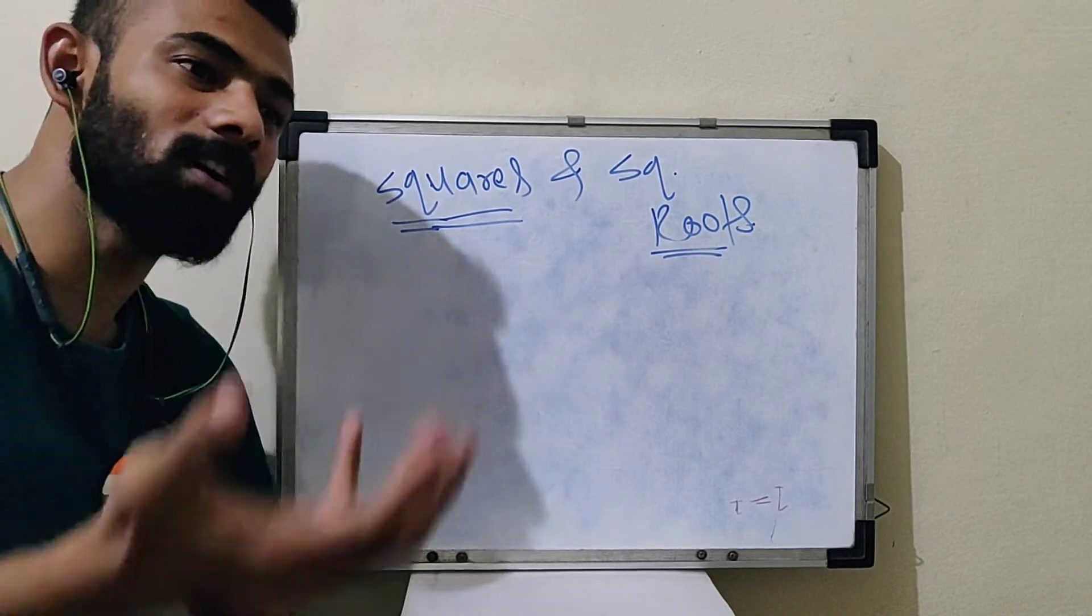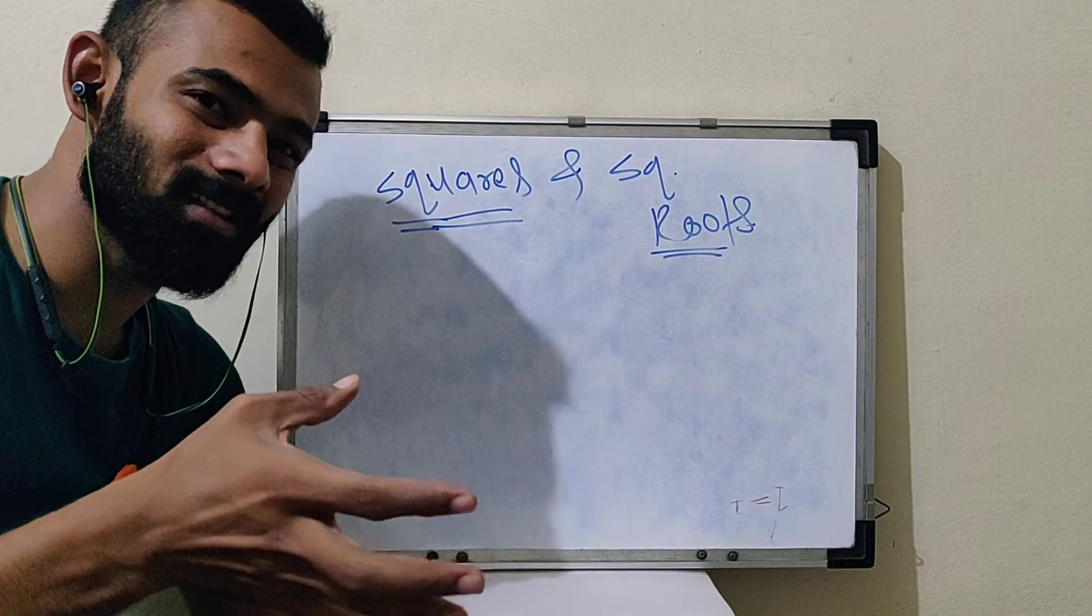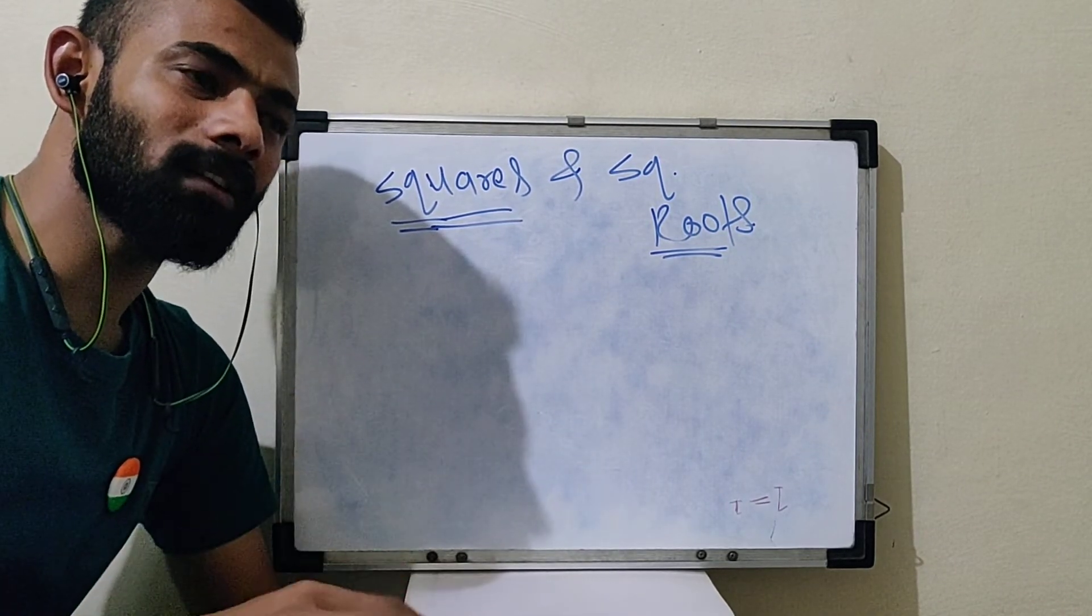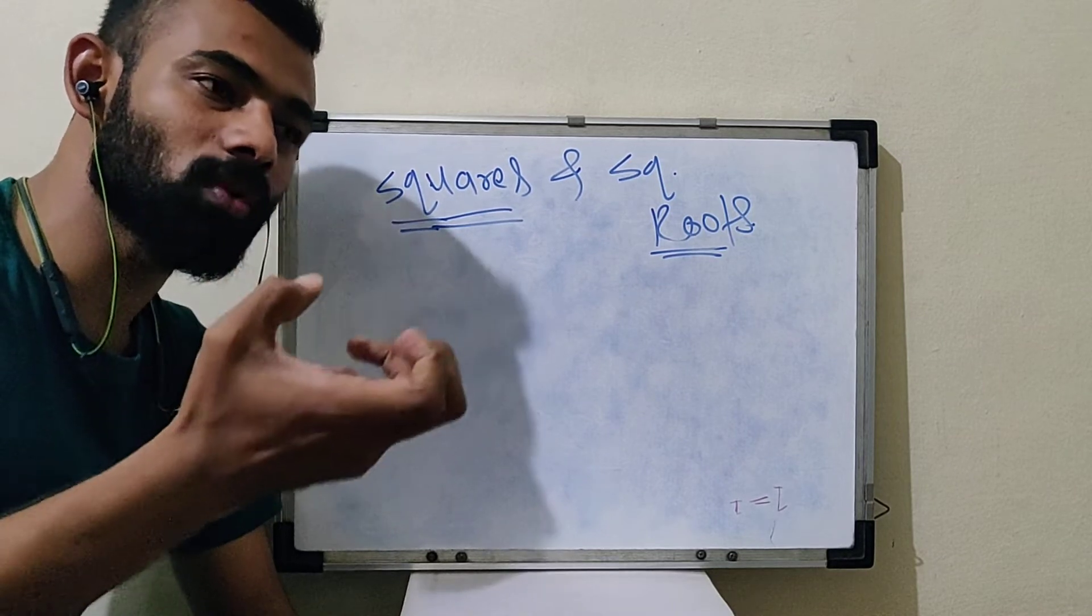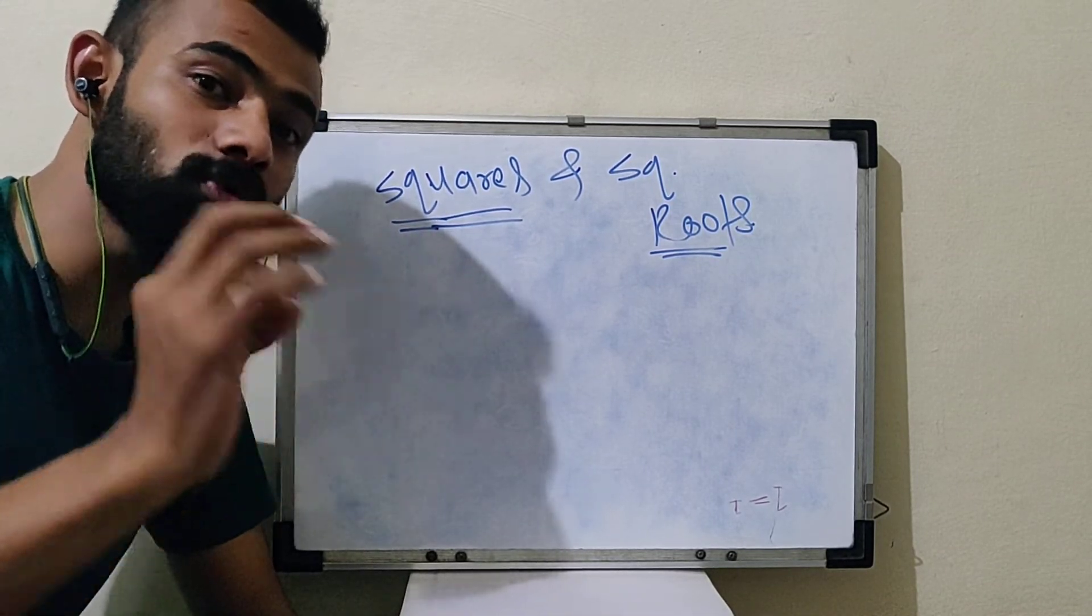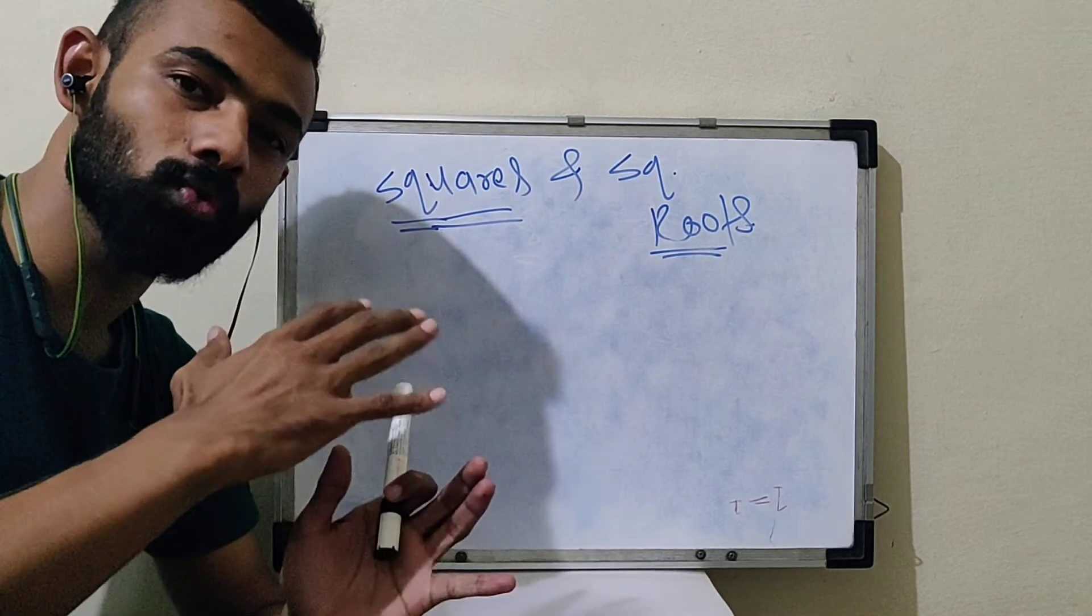Apart from this, if you are preparing for banking exams, CSAT etc., I suggest you should learn at least up to 50. So you should learn squares until there.